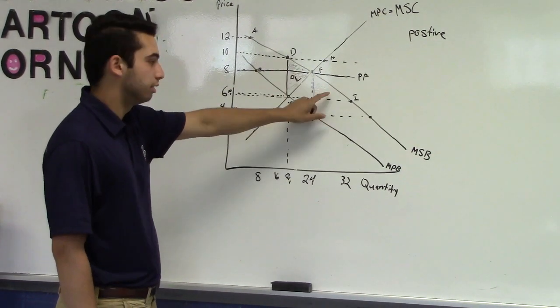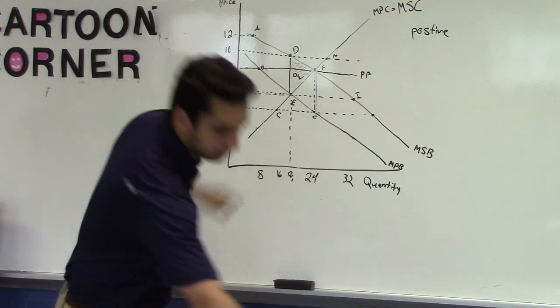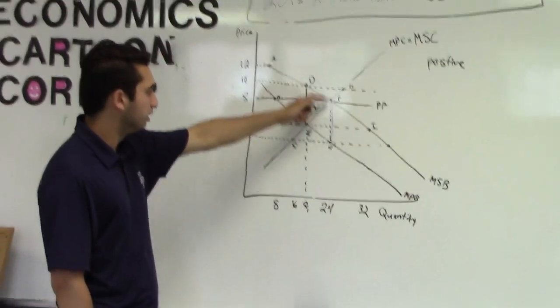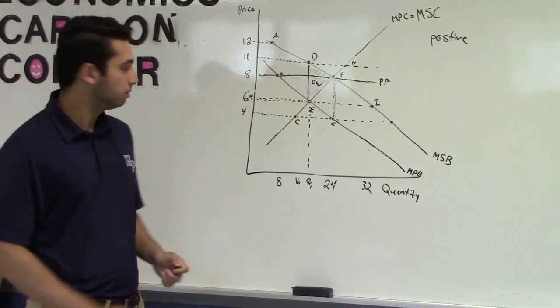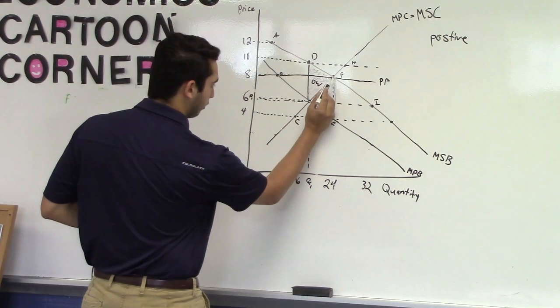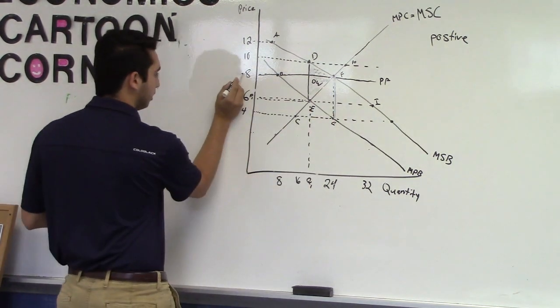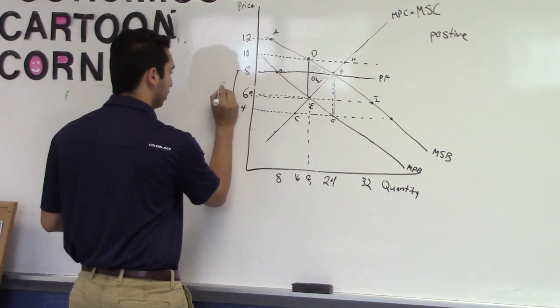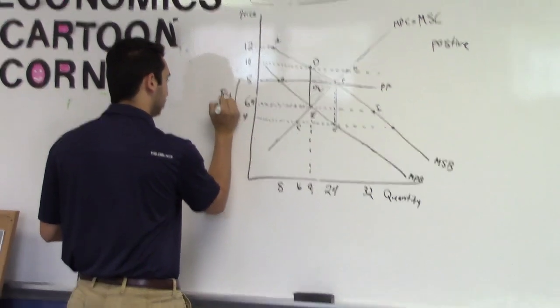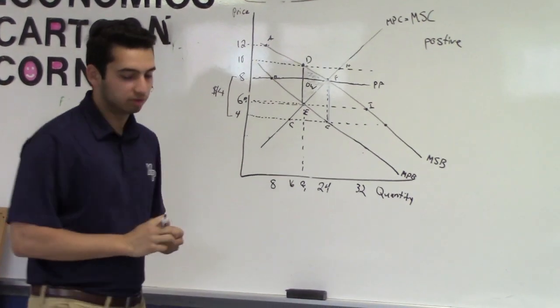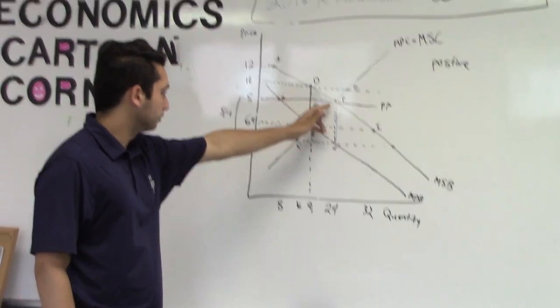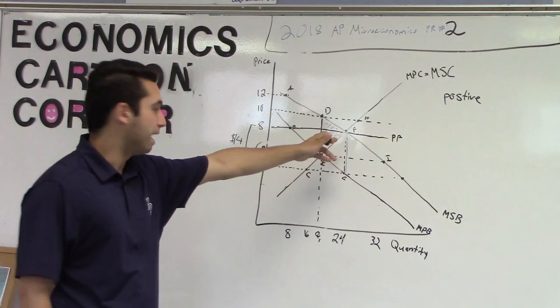So the line segment FG is the difference between these two. So we draw that right here, and we can see that the price difference in FG is actually $4. So with a subsidy of $4 per unit, the company would produce at F, and that would be a $4 subsidy per unit.